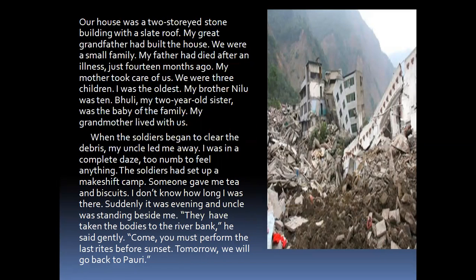Our house — a two-storied stone building with a slate roof — had been built by my great-grandfather. We were a small family. My father had died after an illness just 14 months ago. My mother took care of us. We were three children — I was the oldest. My brother Neeloo was 10. Bully, my two-year-old sister, was the baby of the family. My grandmother also lived with us. Bridge's family: his mother, younger brother Neeloo, two-year-old sister Bully, and grandmother — father had died 14 months before.